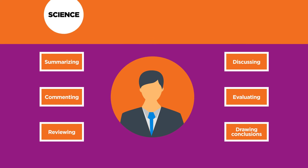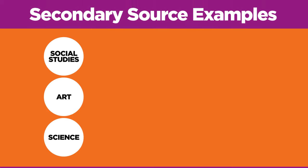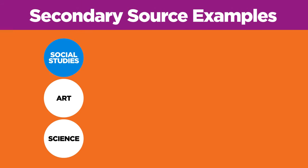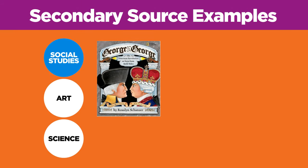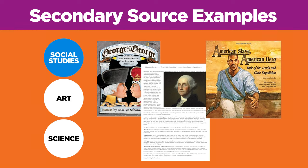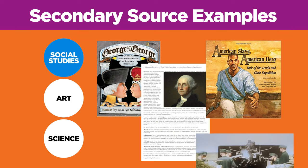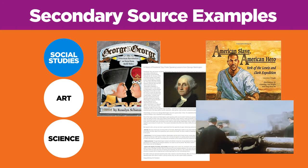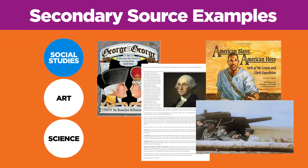Let's look at some secondary source examples. For social studies, you may find a book discussing the Revolutionary War from both the American and the British perspectives, an article analyzing President George Washington's speaking style, a biography about York's contribution to the Lewis and Clark expedition, or a documentary recounting one of the final events of World War II.